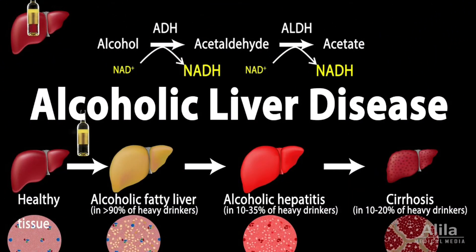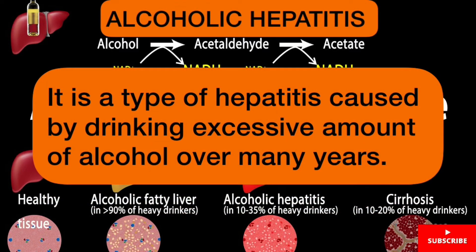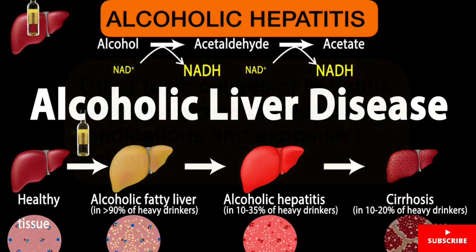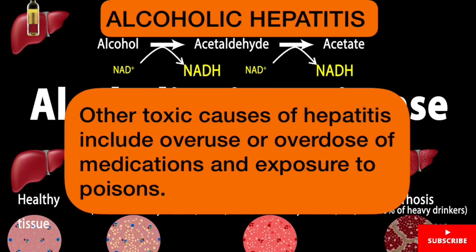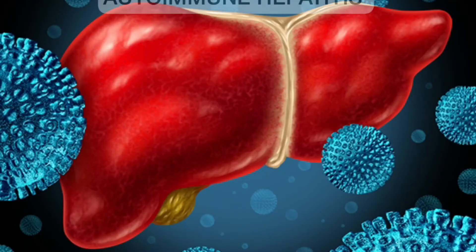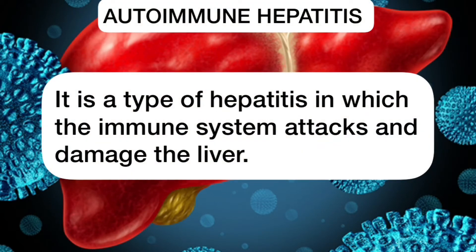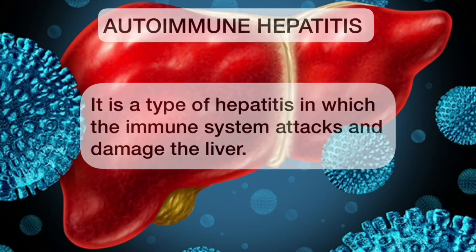Apart from viral Hepatitis, there exist other types of Hepatitis. Alcoholic Hepatitis is caused by drinking excessive amounts of alcohol over many years. Other toxic causes of Hepatitis include overuse or overdose of medications. We also have autoimmune Hepatitis, which is a type in which the immune system attacks and damages the liver.